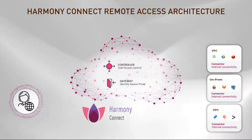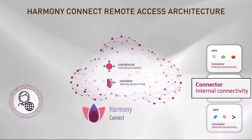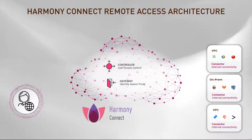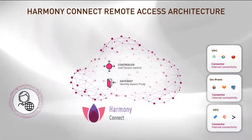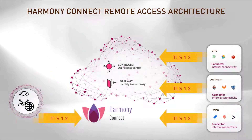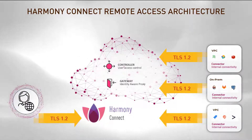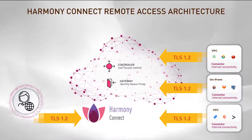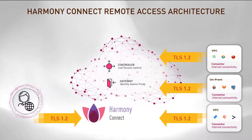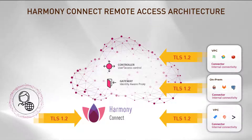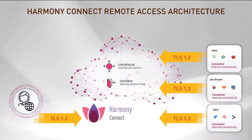From a deployment standpoint, there is a one-time connector installation needed at the company data center. The connector itself is a component for tunneling purposes. It opens a secure Mutual TLS 1.2 tunnel to the Checkpoint cloud. There is no need to open any inbound ports whatsoever — only outbound access from the connector to a set of IP addresses.